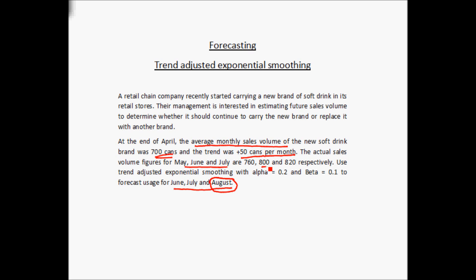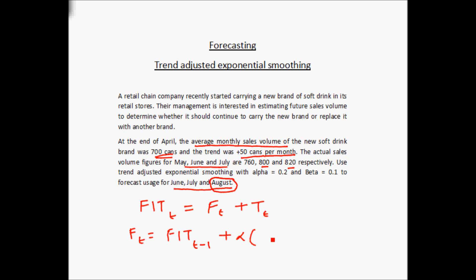For June and July we already know the actual demand. The formula for trend adjusted exponential smoothing is: forecast including trend for period t equals the forecast for t without the trend plus the trend for period t. The forecast for period t equals the forecast including trend for period t minus 1, plus alpha multiplied by the actuals for t minus 1 minus the forecast including trend for t minus 1.